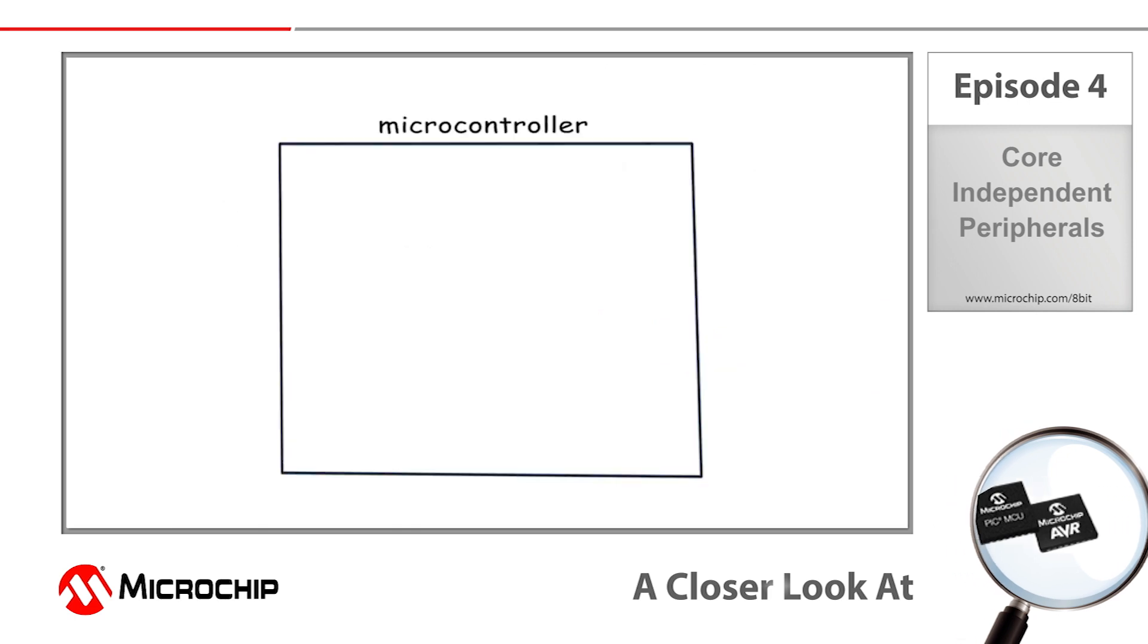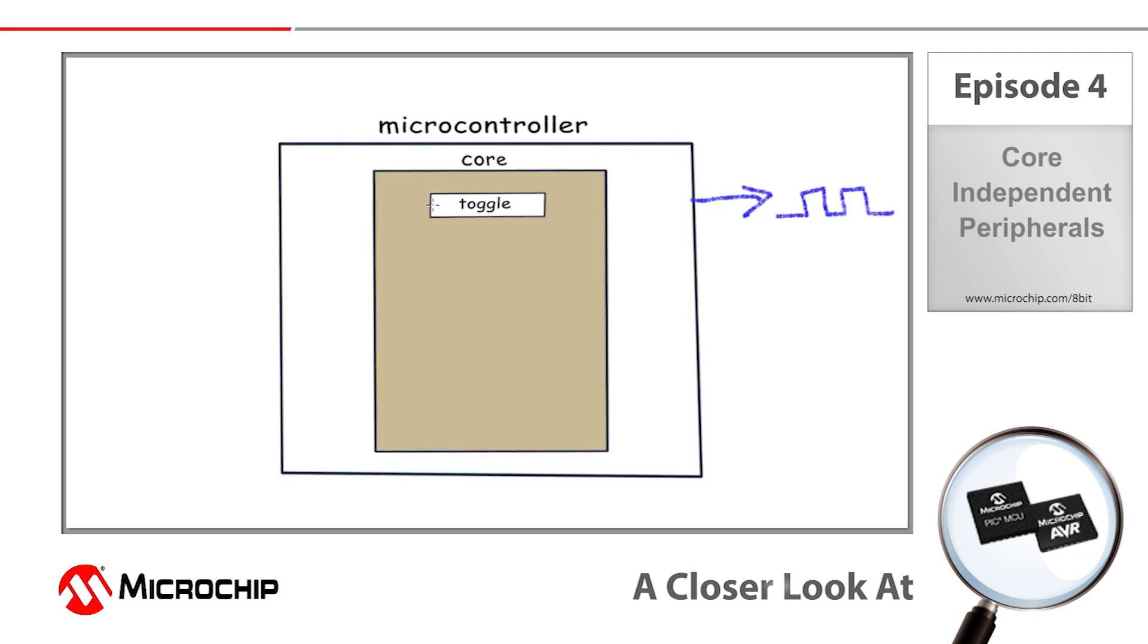To do this I'm going to use a very basic example in which I want to toggle an IO port pin high and low, so basically creating a square wave output or what you could even call a heartbeat signal. Now to accomplish this heartbeat signal I've written some code that will toggle the output high to low or low to high each time through a loop that I've shown here using this flowchart.